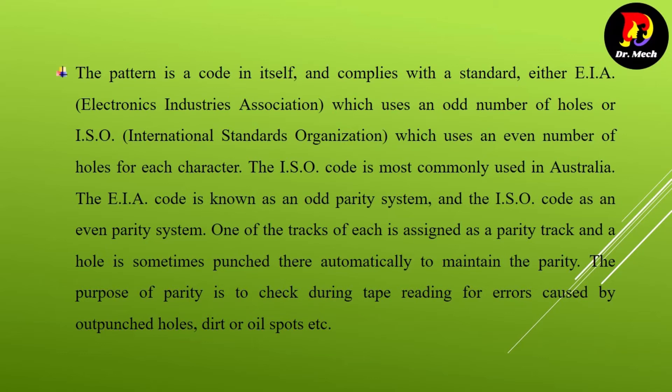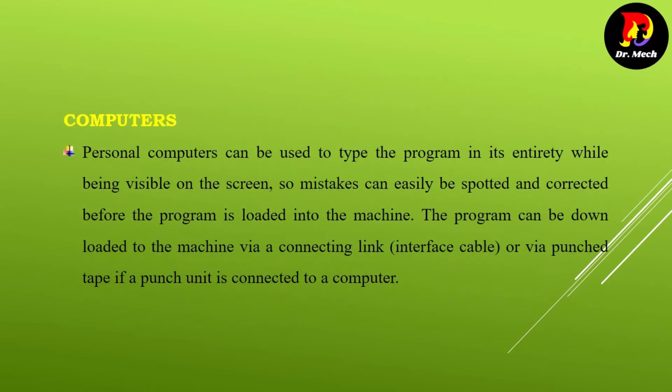Personal computers can be used to type the program in its entirety while being visible on the screen, so mistakes can easily be spotted and corrected before the program is loaded into the machine. The program can then be downloaded to the machine via a connecting link interface cable, or via punch tape if a punch unit is connected to the computer.